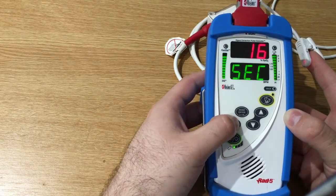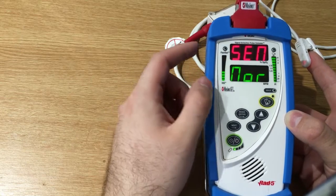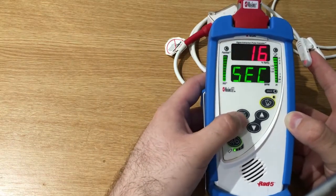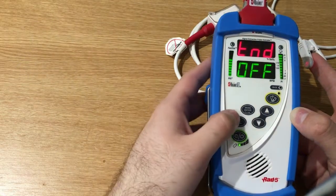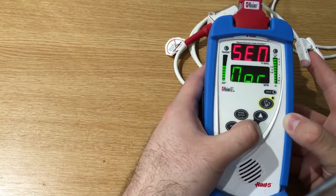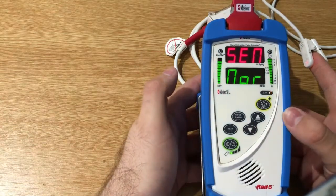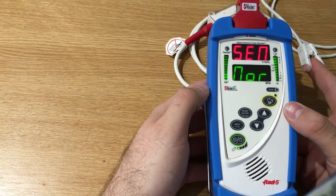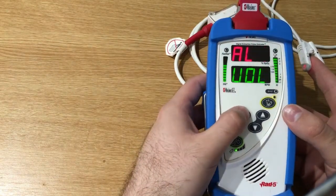So here we have other sub-menus as well. We can select the sensitivity, and we have the three sensitivity modes that we have in the Radical 7 as well. We have the normal, that's something in between the maximum and the APOD. So in this menu we have the APOD, the normal, and the high. The APOD is the Adaptive Probe Off Detection, and this is the least sensitive in picking up a reading with low perfusion. The maximum is the best one, and the normal one is a combination between the two.